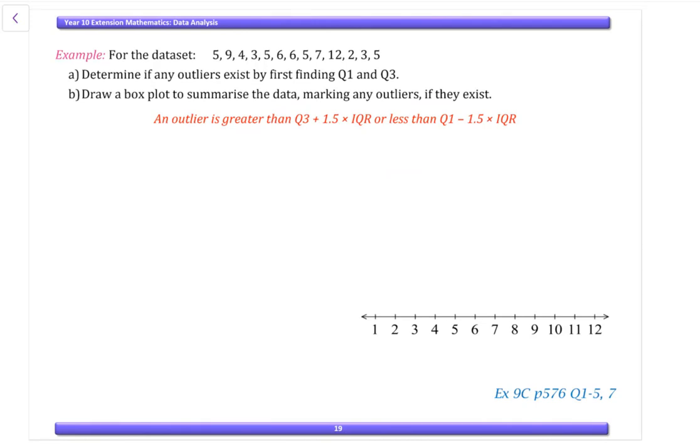So let's do an example of that. We have a data set. Now determine if any outliers exist. So our first step is we have to put the data in order. So we have two, two threes, four fives, and then I saw a four, two sixes, a seven, a nine, and a 12. So I've got thirteen pieces of data. So splitting it, we've got the six and our median equals five.